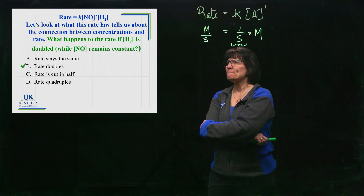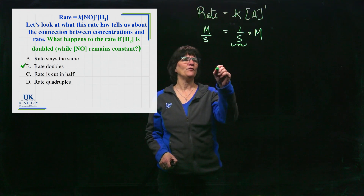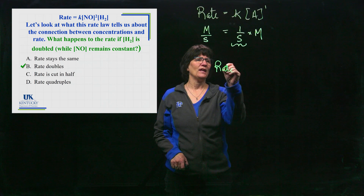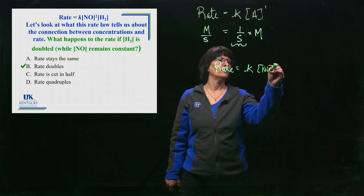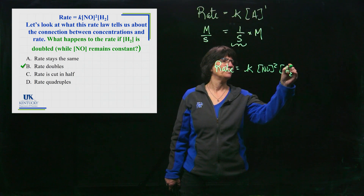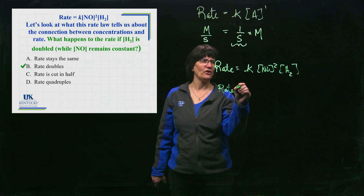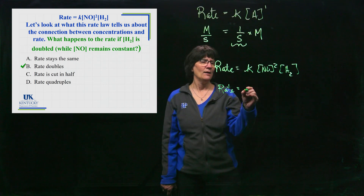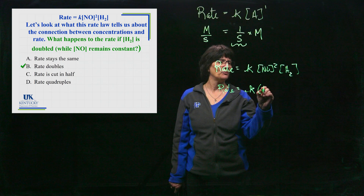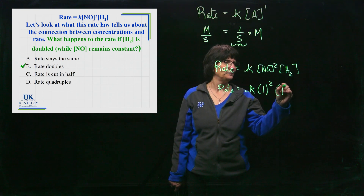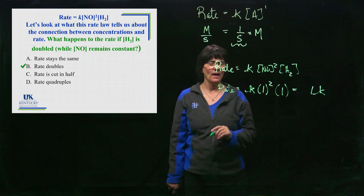Did you say it would double? Then you got it right. Looking at the rate law — k[NO]²[H₂] — one way to work through this is to plug in convenient numbers. Say the first time we run the experiment we use ones: 1² × 1 = 1k.